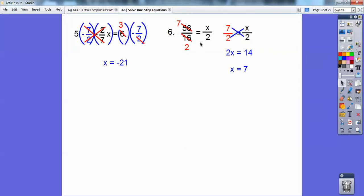But once you had to reduce it right there, you would still get it if you did 56 times 2 equals 16x and divide whatever that is by 16. It would have been 7.